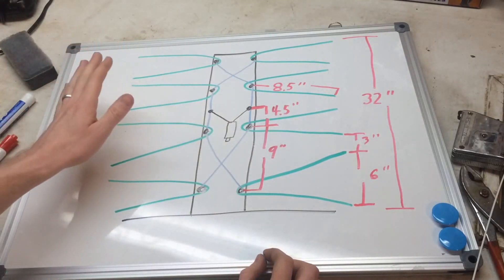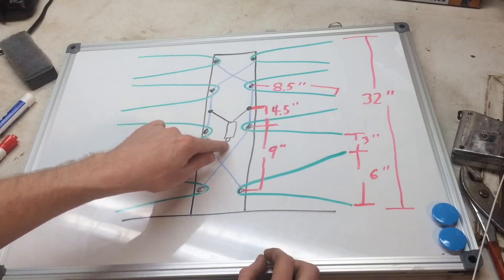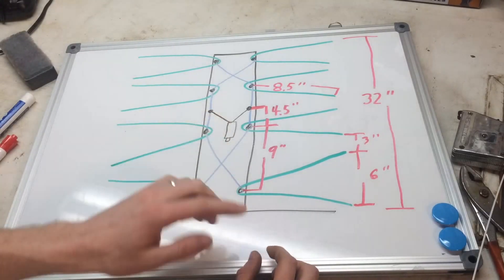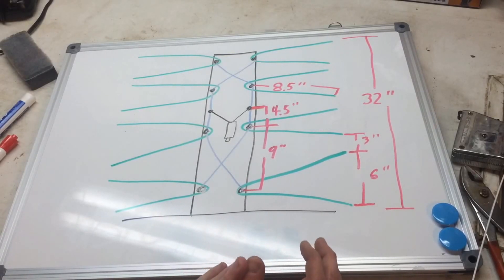Then when you get all that set up, you're going to run your coax to the end of this transformer and run that to the back of your TV. And be sure to put your antenna in a spot where it can get a good signal. Mine's in my attic near a window.